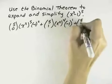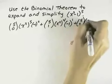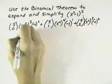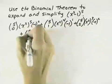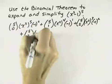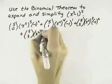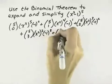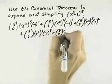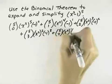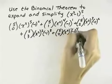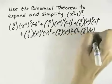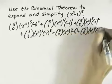Then we have C(5, 2). This time x squared decreases to the third power, and the negative 1 increases to the second power. Continuing, we now have C(5, 3) with x squared decreasing to the second power, and negative 1 increasing to the third power. C(5, 4) with x squared decreasing to the first power, and negative 1 increasing to the fourth power. And finally, C(5, 5), where x squared is to the zero power, and negative 1 is to the fifth power.